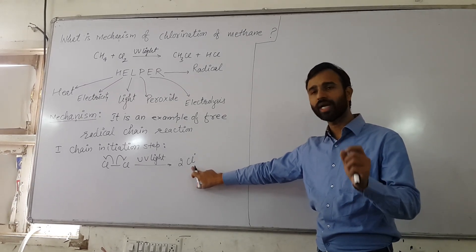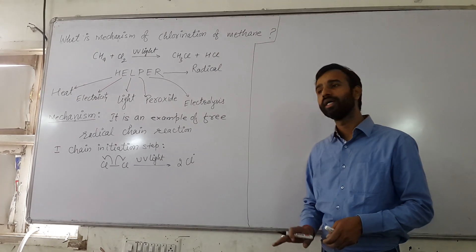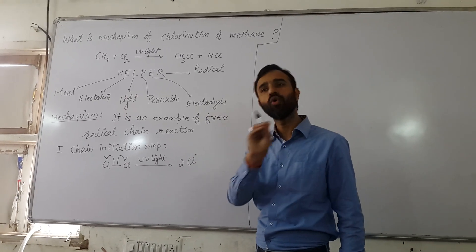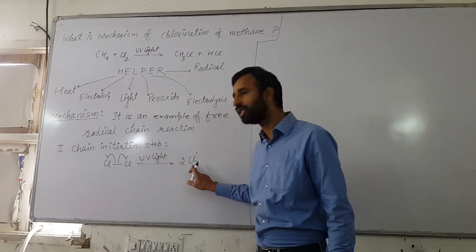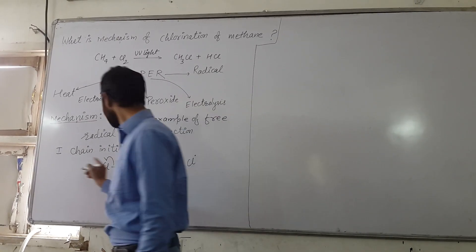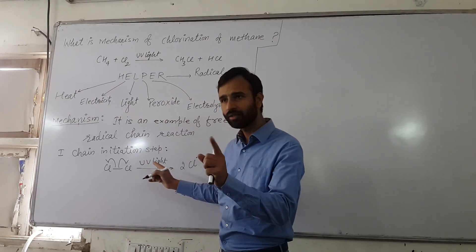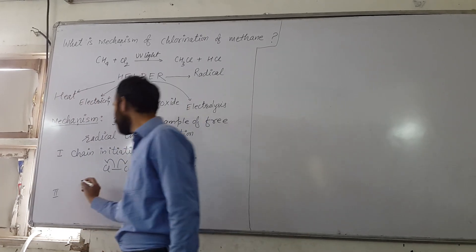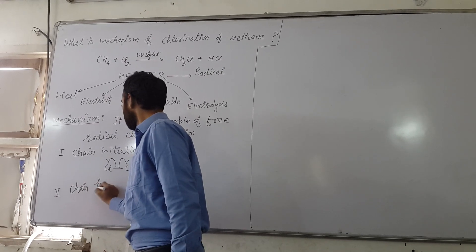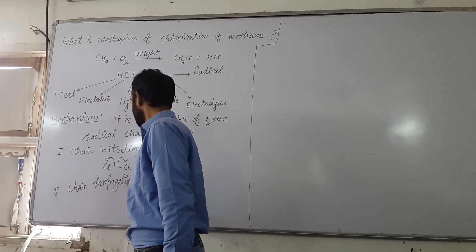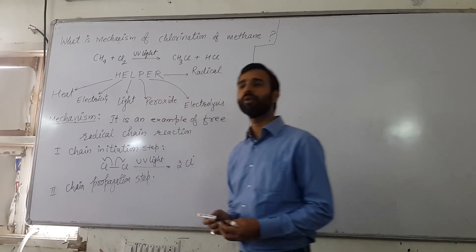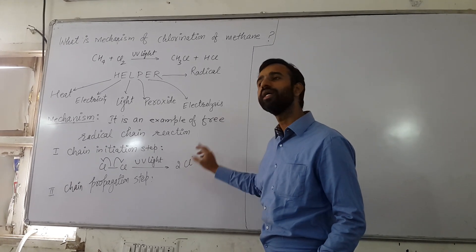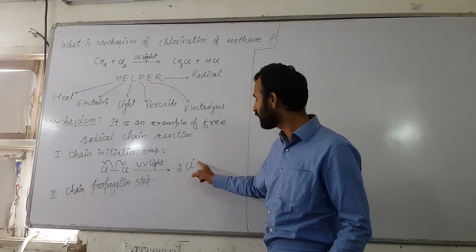A free radical is an odd electron species and it is electron deficient. Once we get free radicals, the reaction proceeds on its own because of these free radicals — there is no further need of UV light. One photon of light serves our purpose. Once we get the chlorine free radical, we can propagate the chain.